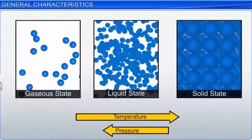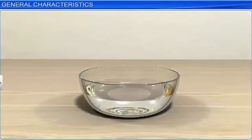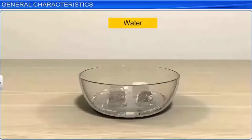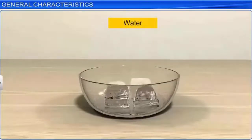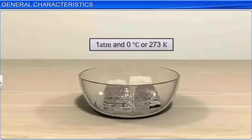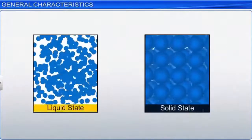For example, at one atmospheric pressure, water in liquid state gets converted into its solid form, ice, at 0 degrees Celsius or 273 Kelvin. Let us now understand how the molecules of water in liquid state attain the molecular arrangement of water in solid state.